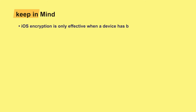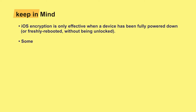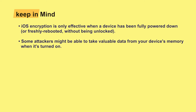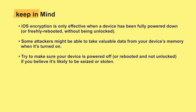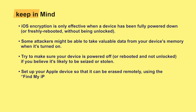Under most circumstances, iOS encryption is only effective when a device has been fully powered down or freshly rebooted without being unlocked. Some attackers might be able to take valuable data from your device memory when it is turned on, and they might even be able to take the data when it has just been turned off. Keep this in mind and, if possible, try to make sure your device is powered off or rebooted and not unlocked if you believe it is likely to be seized or stolen.